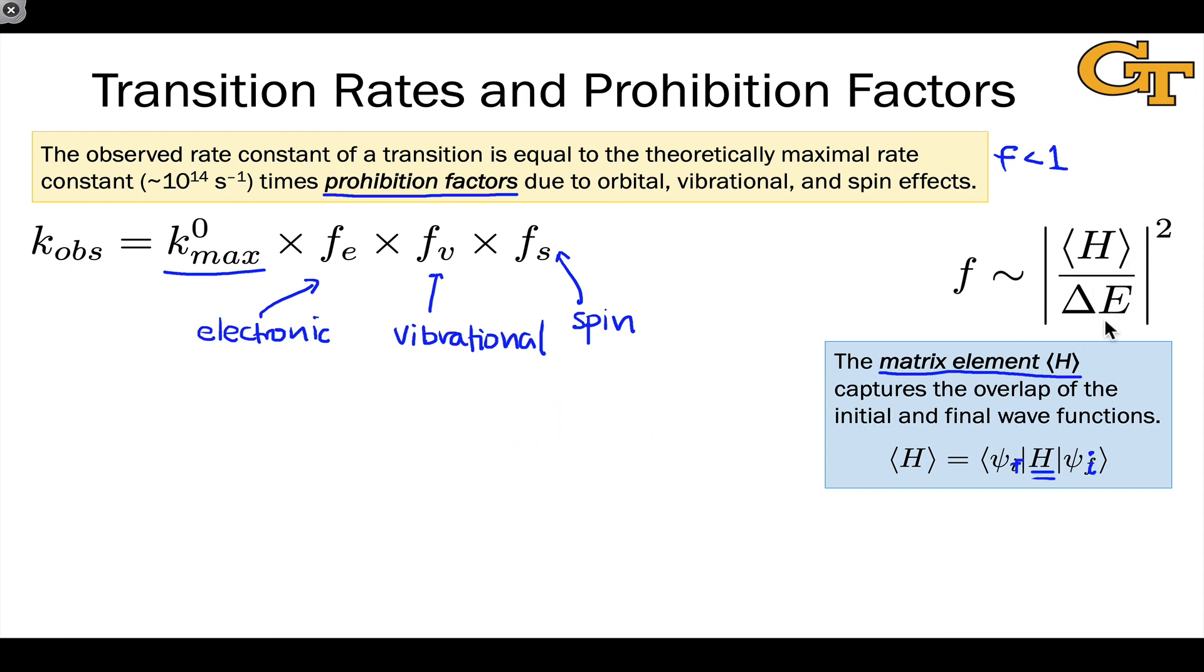The matrix element divided by the energy difference squared is a rough measure of the prohibition factor. So intuitively, the greater the difference in energy and the smaller the matrix element, the smaller is this F value and the lower is the rate. Important intuition to keep in mind - an idea we'll return to when we talk about the energy gap law. Delta E, the extent of the difference in energy between the states, matters, as does the matrix element. This is for the time being a very qualitative relationship, but one that gives us good intuition for appreciating whether a transition will be relatively fast or slow.